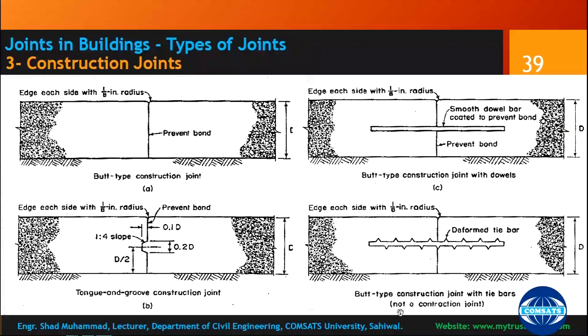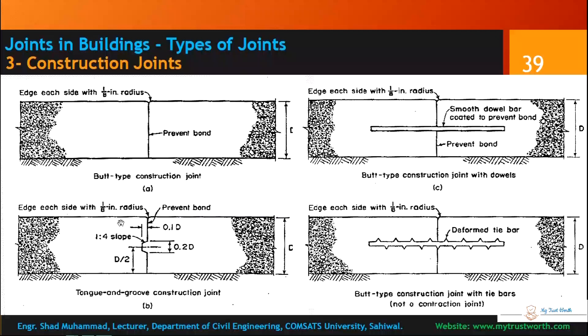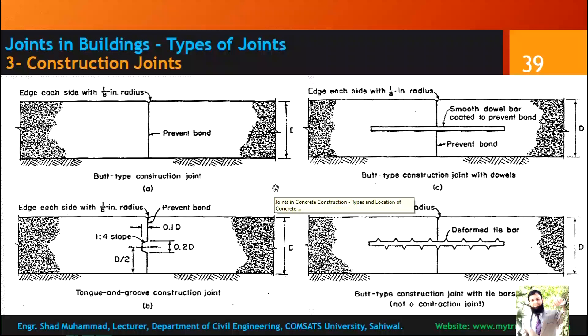A butt-type construction joint with deformed dowel bars cannot contract and is therefore not a contraction joint. The other joints can be used as contraction joints. Construction joints can also serve as expansion joints if they are provided in areas requiring expansion. Examples of mass concreting are shown: a retaining wall with keys and rougher surface preparation at construction joints, a dam, and a wall face showing a contraction joint with a groove — a plane of weakness — that allows expansion and contraction.